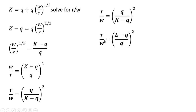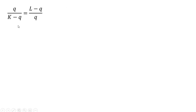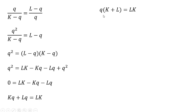We now have two R divided by W equations. We're going to set these two equations equal to one another, and then solve for Q — that Q will be our production function. Taking the square root of both sides gives us this result. Multiplying through by Q, then multiplying through by K minus Q, and simplifying the right-hand side. The Q squareds cancel. Moving some things around and factoring out a Q term on the left-hand side. Dividing through by K plus L, we have the firm's production function. That's it.